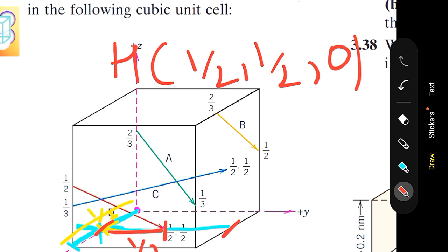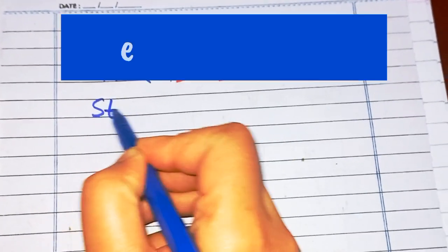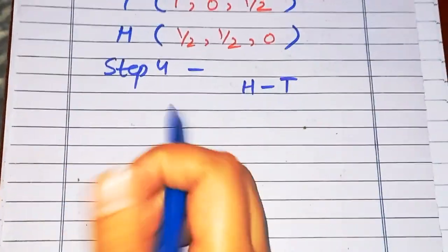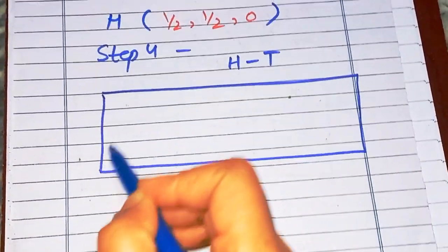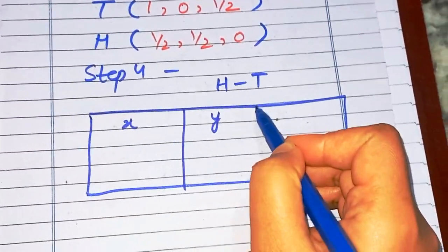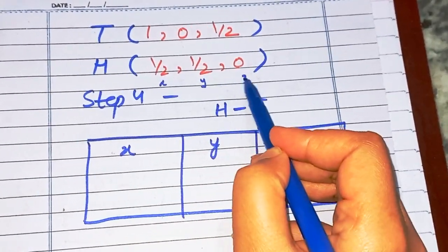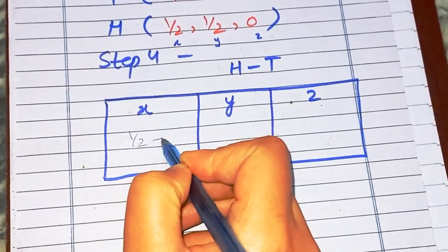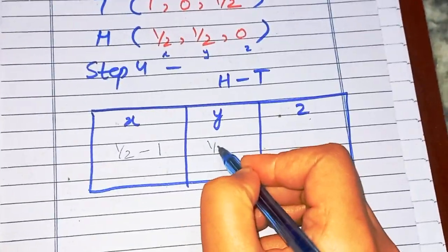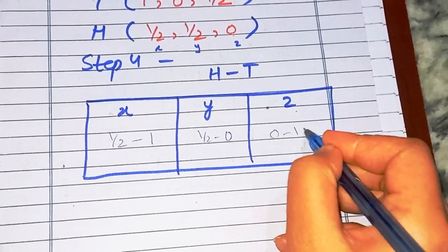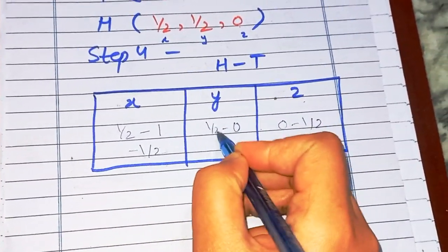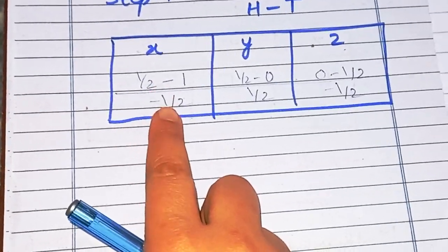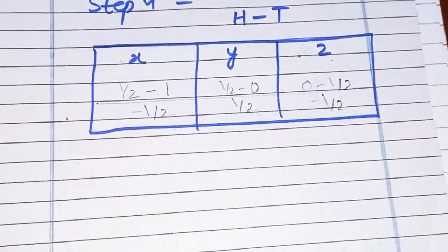Now step four is to subtract the tail coordinates from the head coordinates — that is, head minus tail. For x: 1/2 minus 1 = −1/2. For y: 1/2 minus 0 = 1/2. For z: 0 minus 1/2 = −1/2. These are the numbers we have so far, and we can see that fractions are involved.